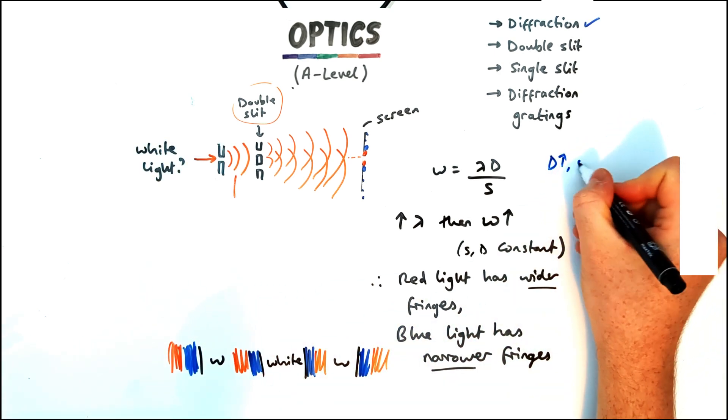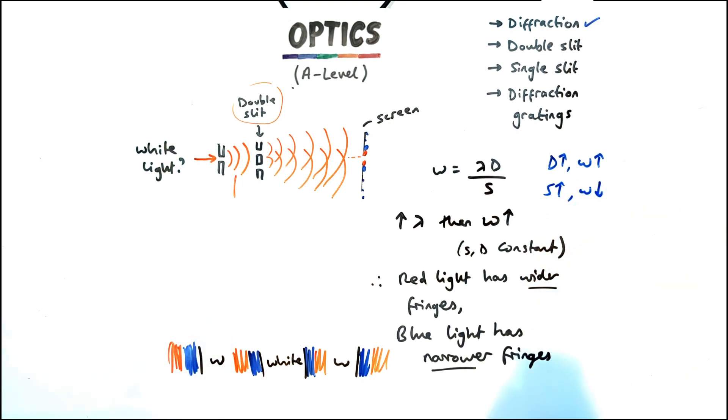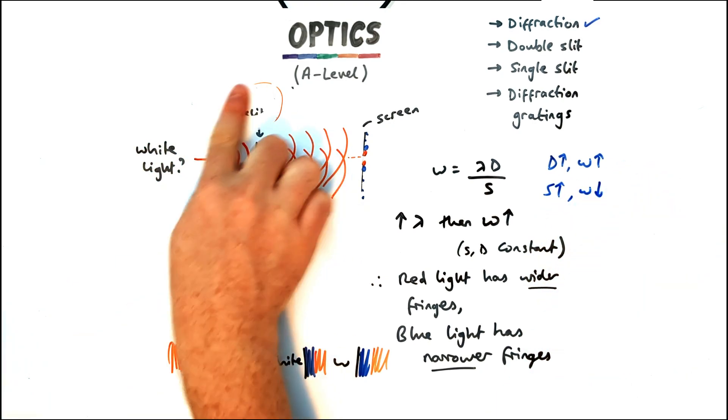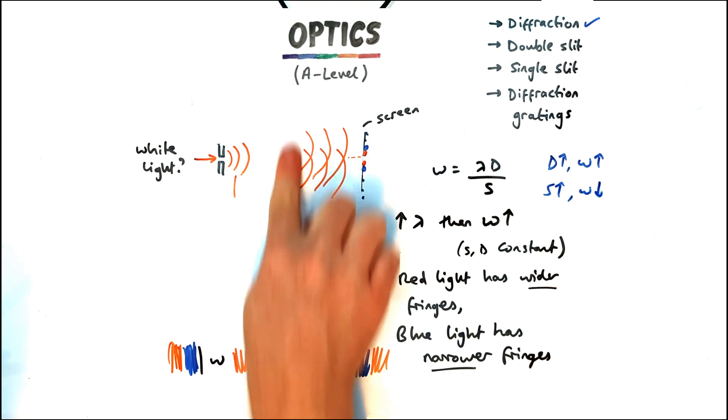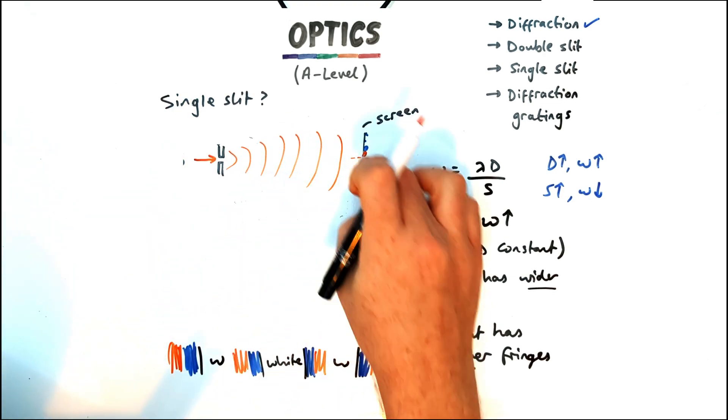Also worth noting if you were to make the distance to the screen bigger the fringes get further apart and if you were to increase the slit separation the width of the fringes would decrease because those two things are inversely proportional.